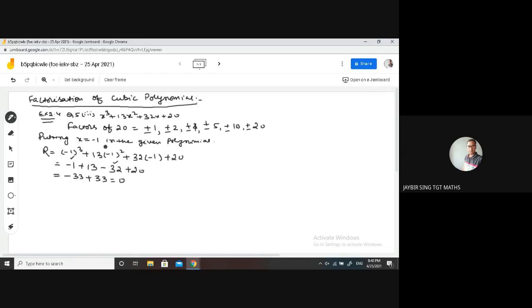If we are getting 0, it means we have to write a factor. By putting x is equals to minus 1, the value of polynomial is 0. So therefore, x plus 1 is a factor of given polynomial.